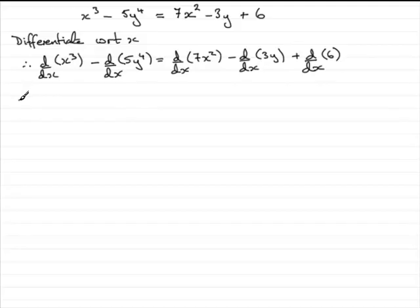Now we know what the differential of x cubed is with respect to x. It's 3x squared. But I'm not going to write that in yet. It's this term that I'm more interested in. Differentiating 5y to the 4 with respect to x. We can't do it. We can only differentiate it with respect to y. If we were to differentiate it with respect to y it would be 20y to the power 3. So how do we get around this problem?